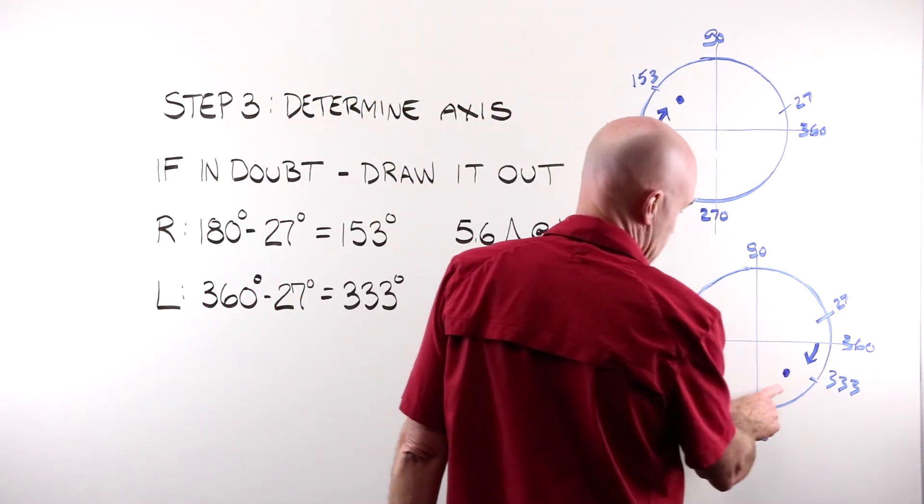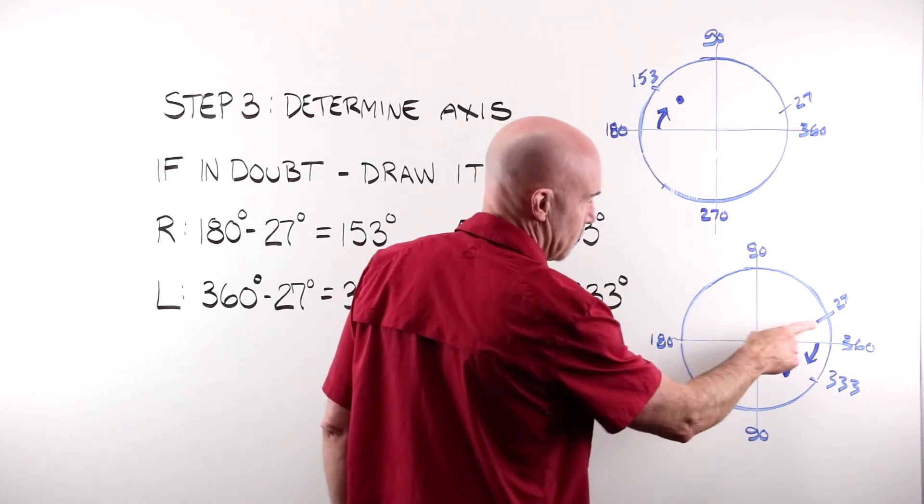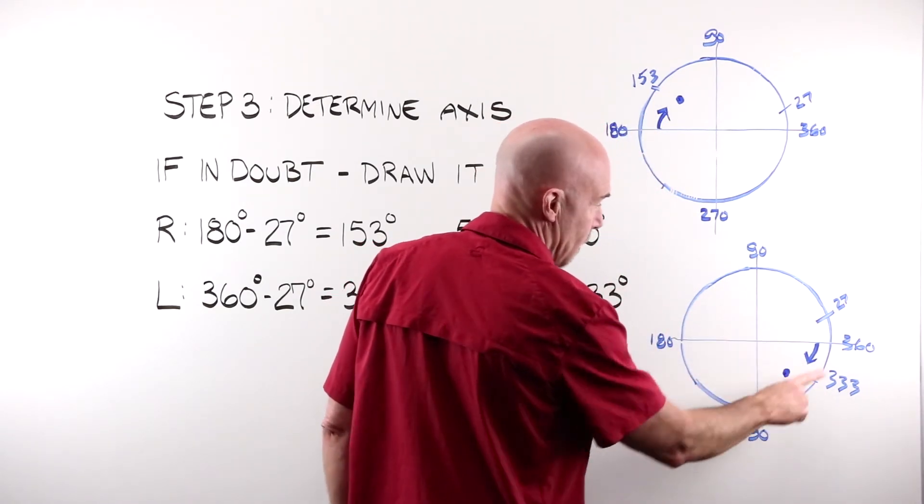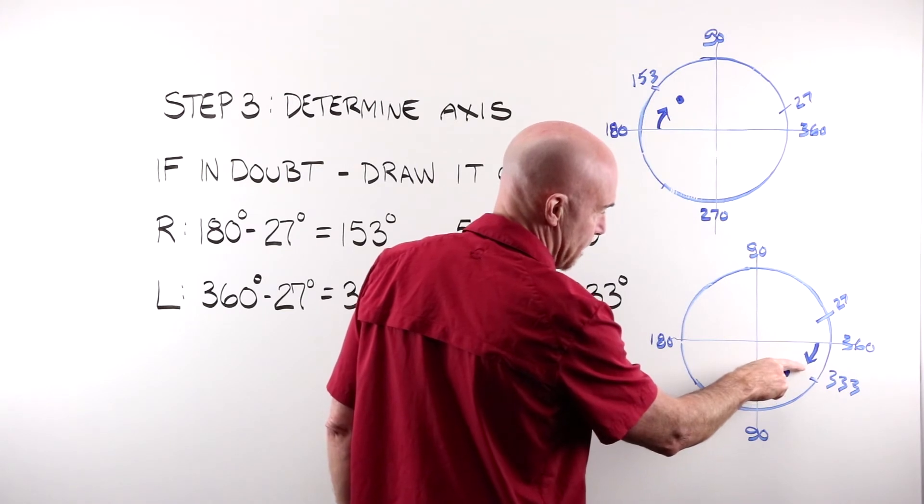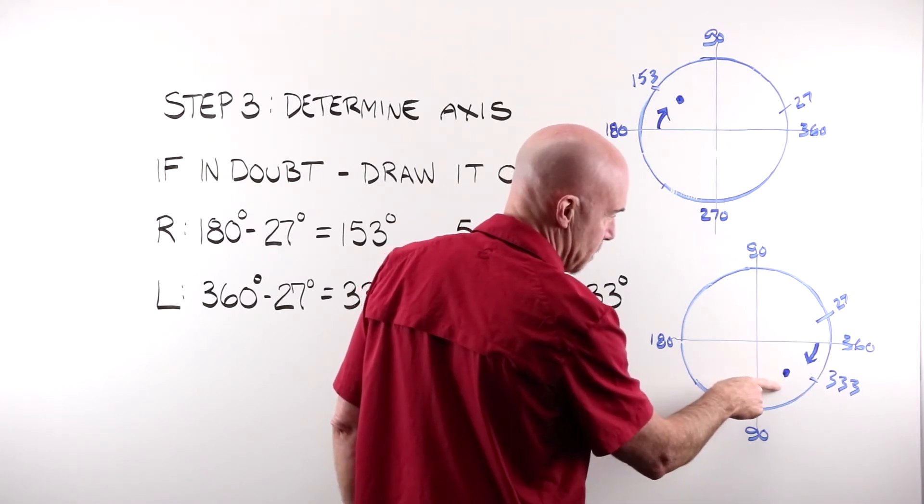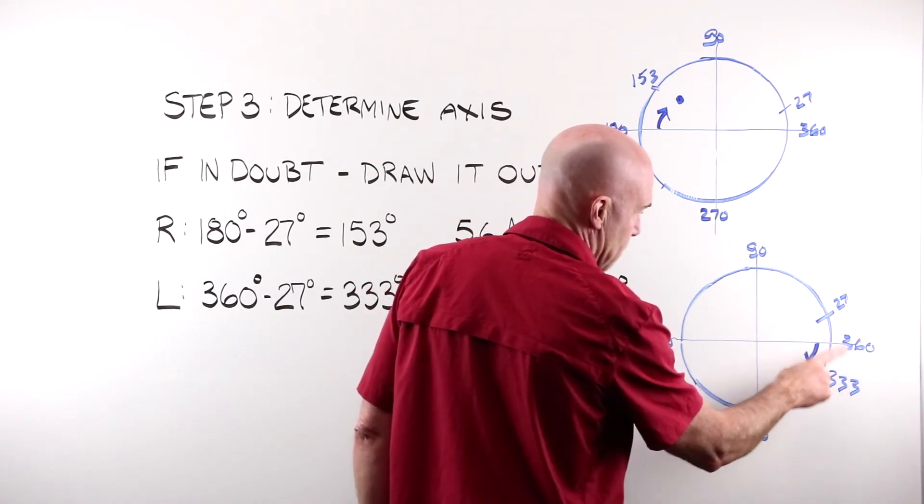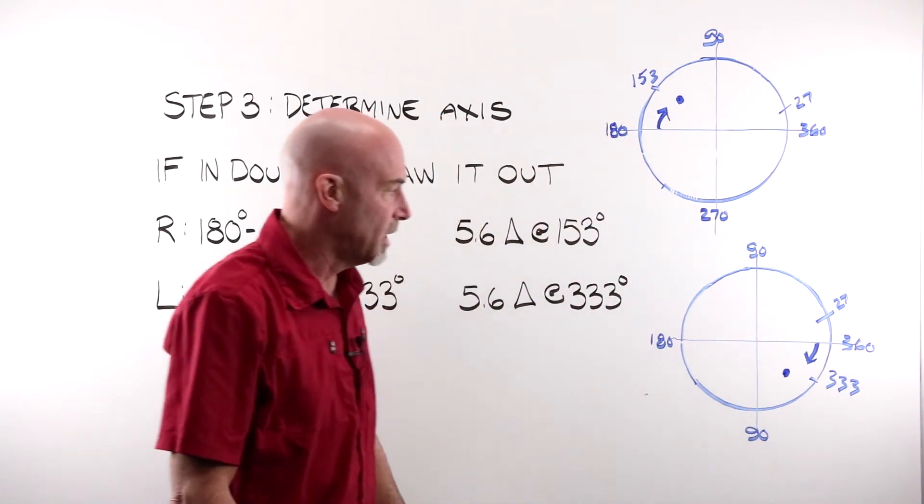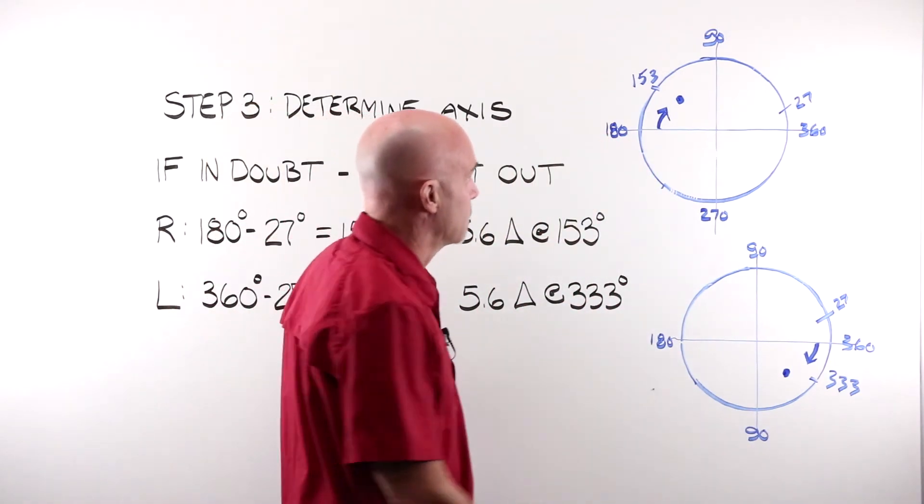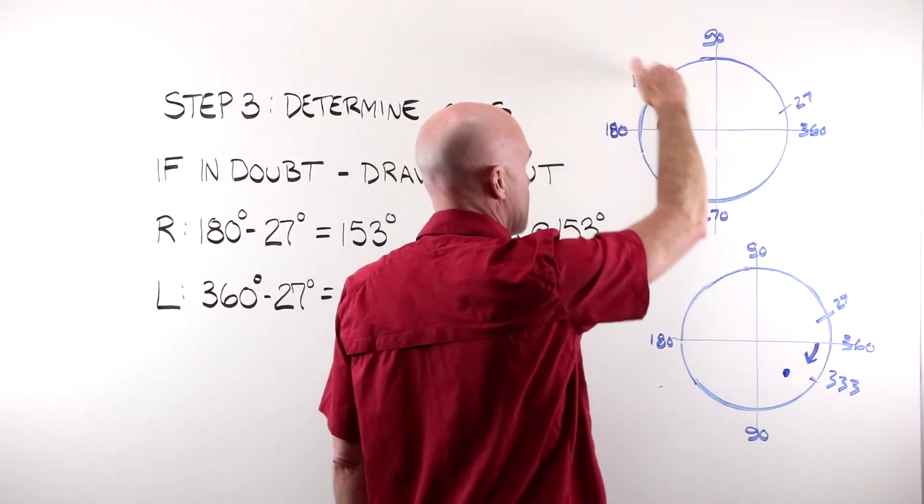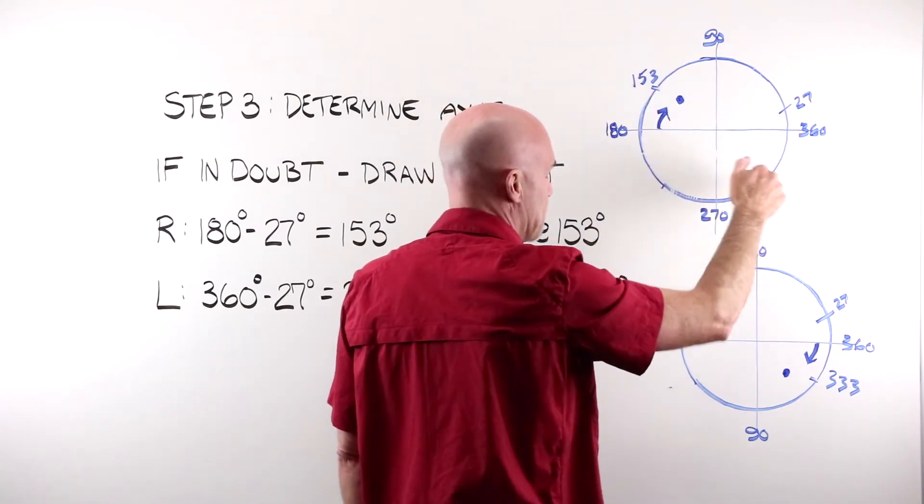For our left, because we need to be in this quadrant, we only have 27, we can move 27 degrees down and into this quadrant. So my 360 minus my 27 brings me down to 333 degrees. Those, of course, because our math is the same, are also directly opposite each other.